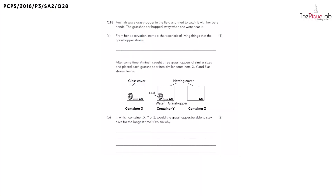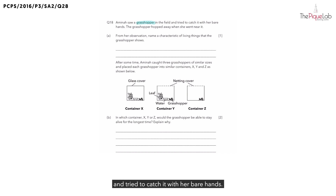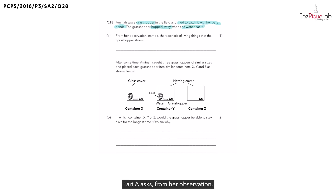Question 18. Amina saw a grasshopper in the field and tried to catch it with her bare hands. The grasshopper hopped away when she went near it. Part A asked: from her observation, name a characteristic of living things that the grasshopper shows.